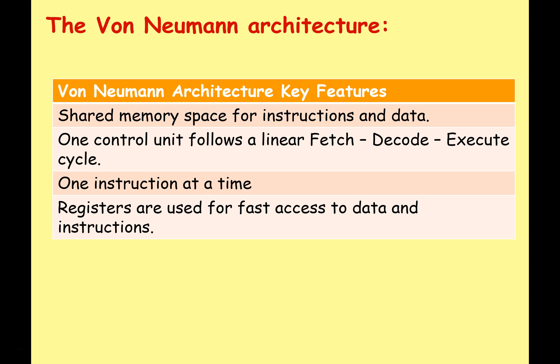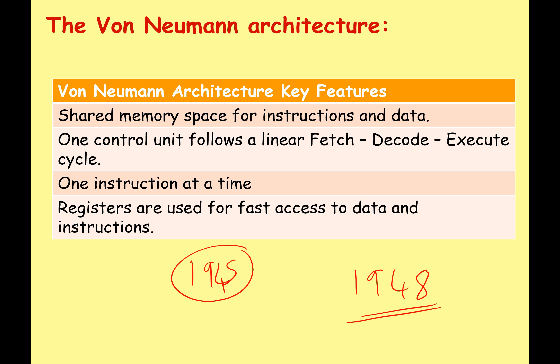John von Neumann was a mathematician and theorist — he wasn't physically building these computers; he wasn't an engineer. Other people would take his ideas and build computers along similar lines. The von Neumann architecture was published as a theory in approximately 1945, and the first real stored program computer was built in 1948 in Manchester, England — a computer called the Manchester Baby. It can be slightly controversial, but generally the Manchester Baby in 1948 is considered the first real working example of a stored program computer.